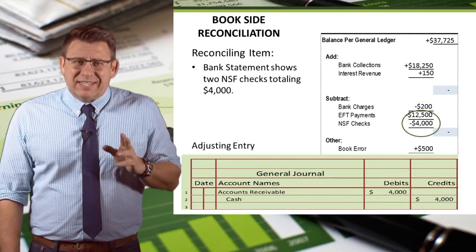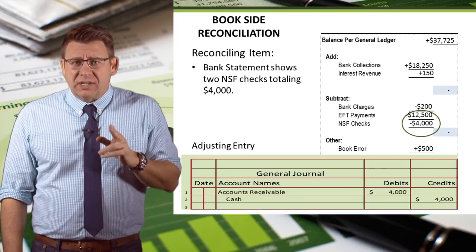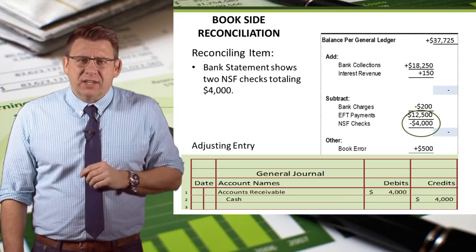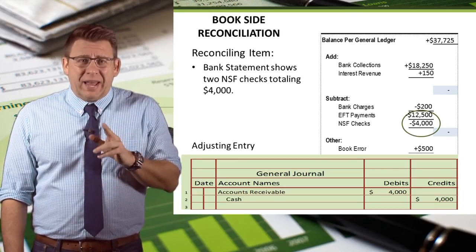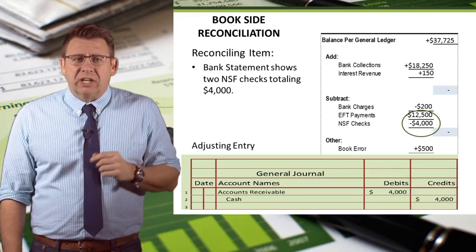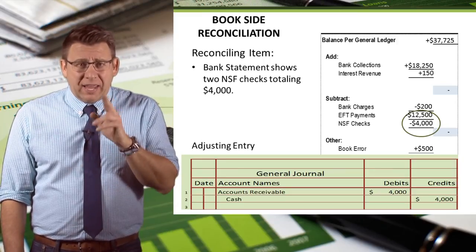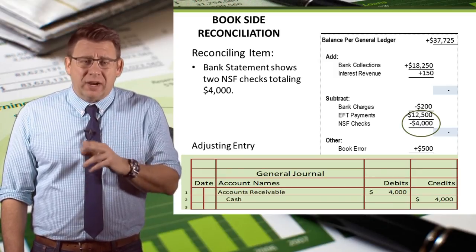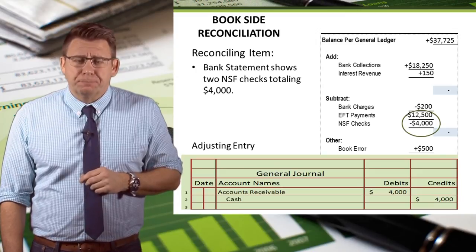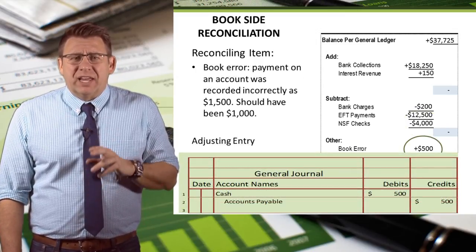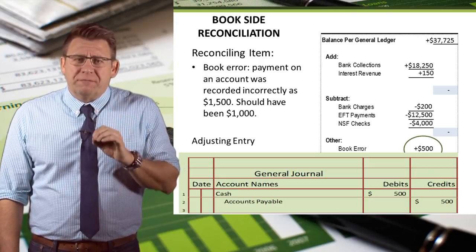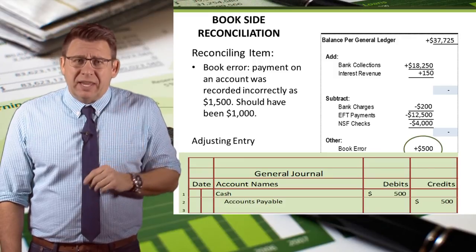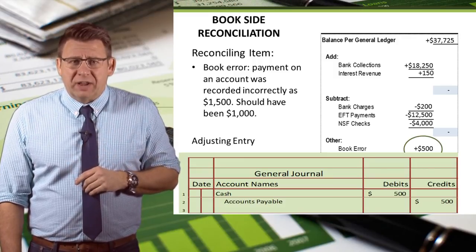The next item is NSF checks — these are bad checks our customers wrote us. So what's the other account that relates to this? Do our customers still owe us money, or did the bad checks erase their debt? Clearly, we're still owed the money, and the account we use when customers owe us money is accounts receivable. So we debit accounts receivable and credit cash for $4,000. The final reconciling item is a book error; in this case, we recorded $500 too much for a payment, so we would debit cash and credit accounts payable for $500.